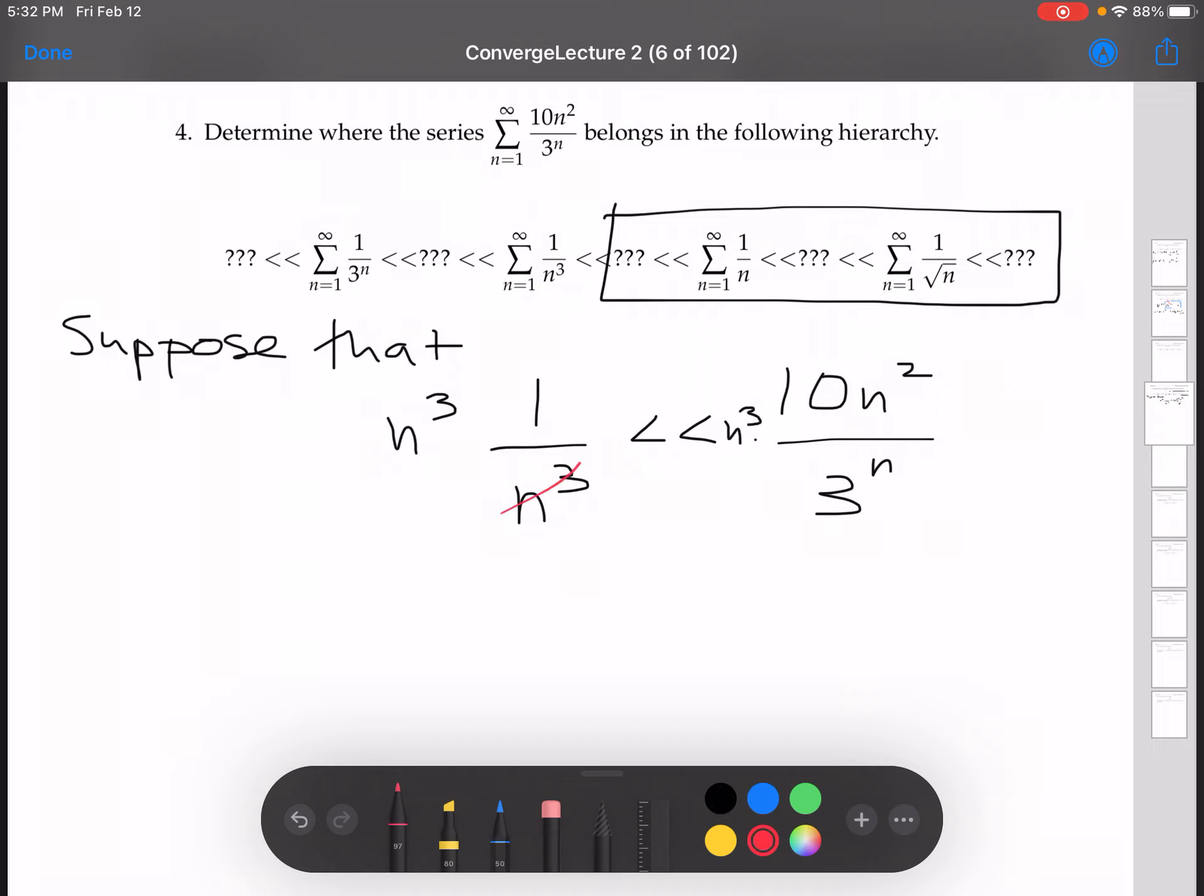These will cancel, and we have 1 times n cubed times 10n squared over 3 to the n. So now let's multiply both sides by 3 to the n. And so now see what happens, right? 3 to the n times 1, that's 3 to the n. And again, these guys cancel. And so then we're left with n cubed times 10n squared.